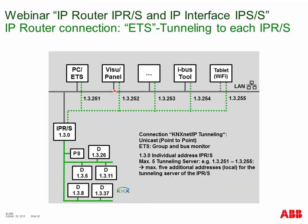Now the tunneling connection. Tunneling works the same as described for the IP interface. The IP router can simultaneously support routing and tunneling. For tunneling, we can connect, for example, ETS via PC, a visualization panel, the iBus tool, or a smartphone or tablet. Tunneling connections work as if the connected device is installed locally inside the line. One IP router can have a maximum of five tunneling connections at the same time. Each tunneling connection needs a physical address — for example the IP router itself has its coupler address such as 1.3.0, and each tunneling connection gets an additional address like 1.3.251 or 1.3.255.